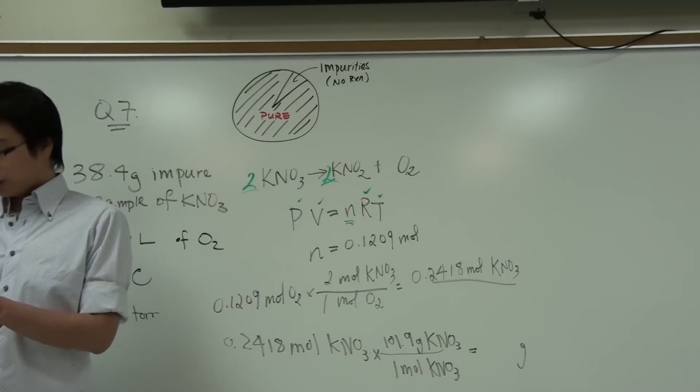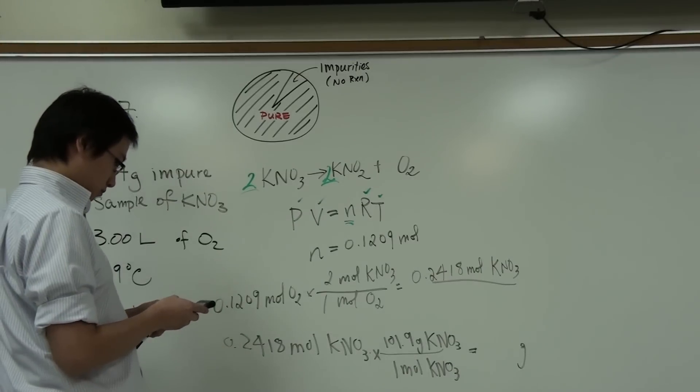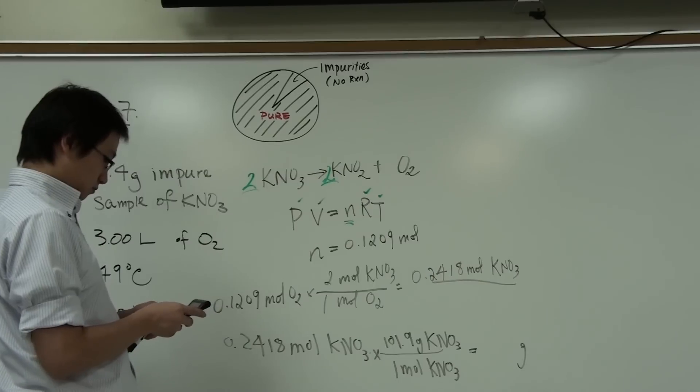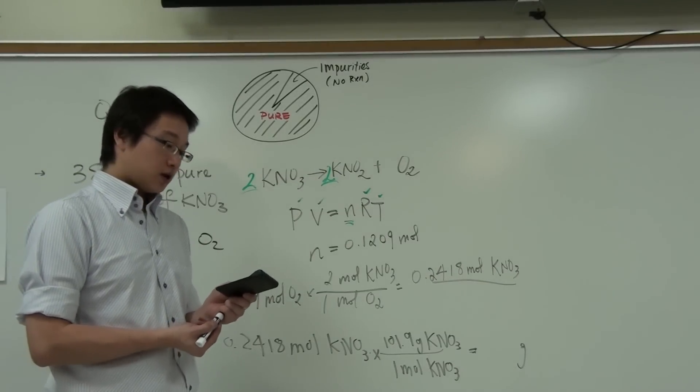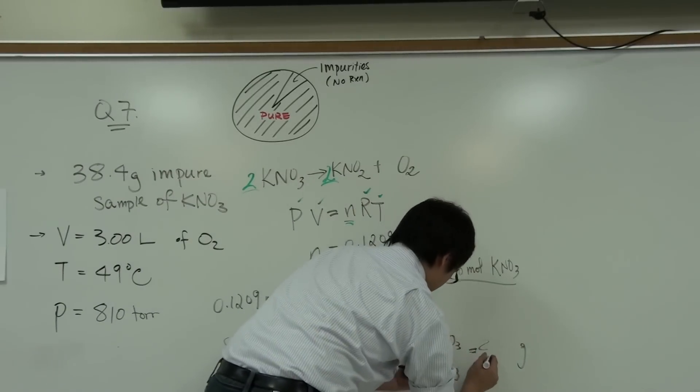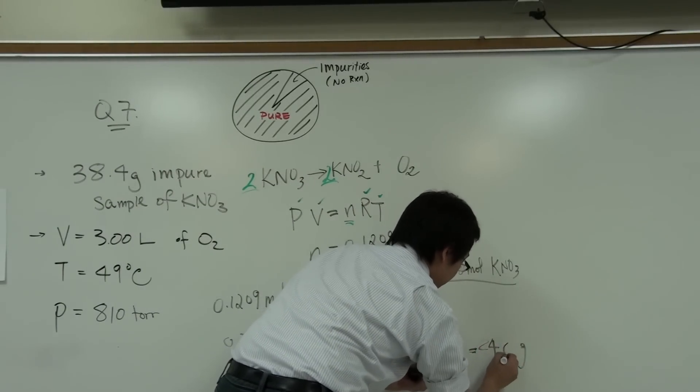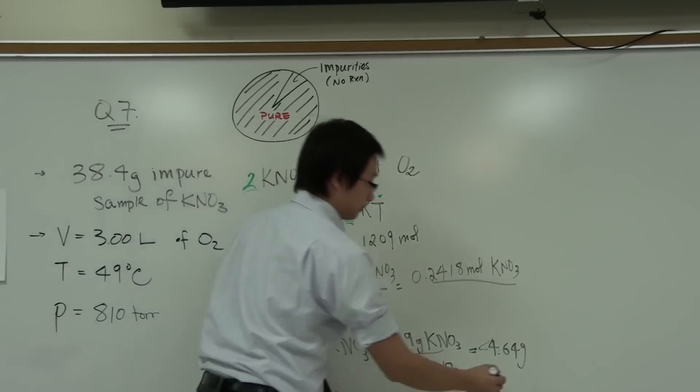So let me use my calculator. We have 24.64 grams of potassium nitrate.